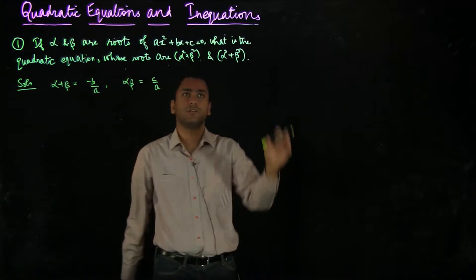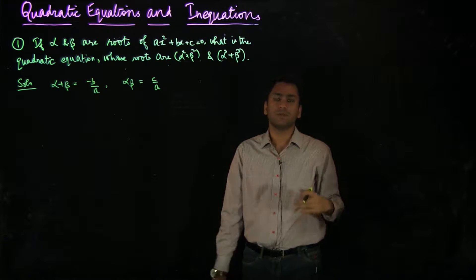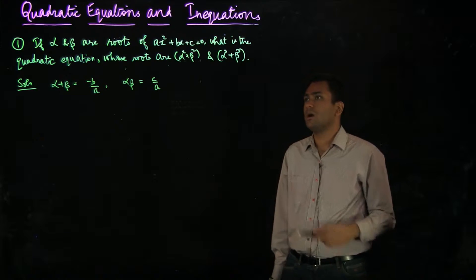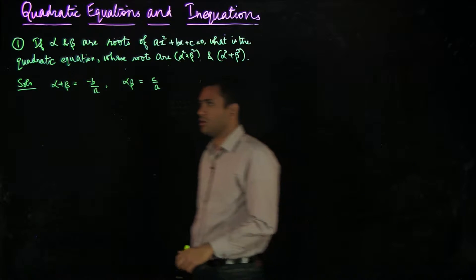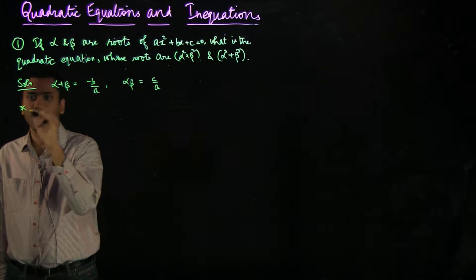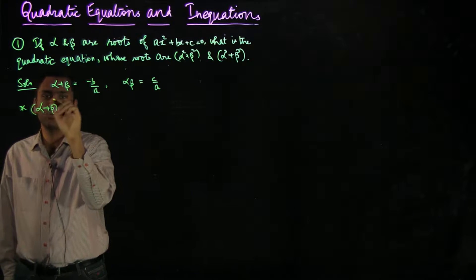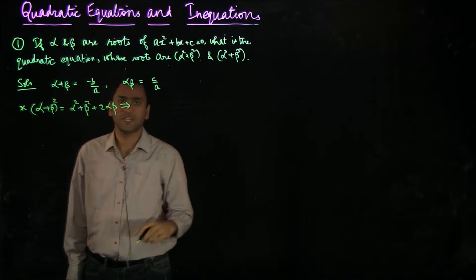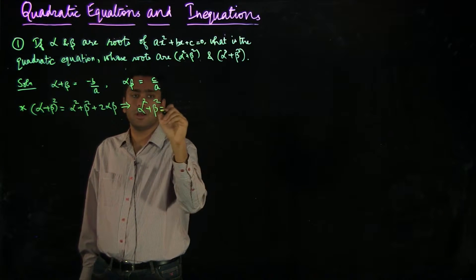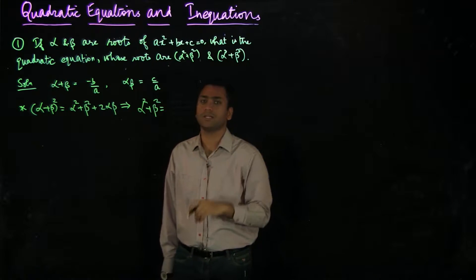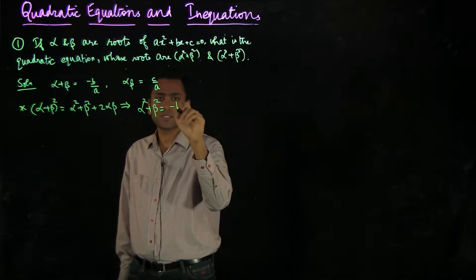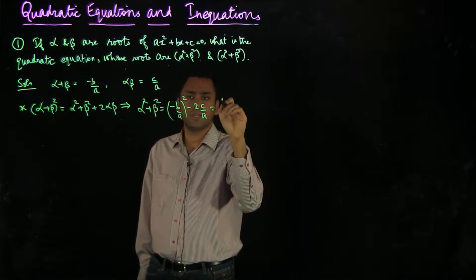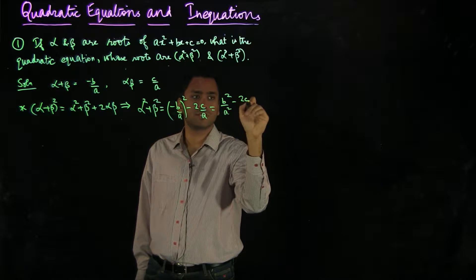Now using these two values, we need to compute the values of alpha squared plus beta squared and alpha cubed plus beta cubed, because once we know these, we will be able to write down the equation of which these two are the roots. We invoke the identity: (alpha + beta)² = alpha² + beta² + 2αβ. It immediately follows that alpha squared plus beta squared equals (alpha + beta)² minus 2αβ, which is (−B/A)² minus 2(C/A), giving B²/A² minus 2C/A.